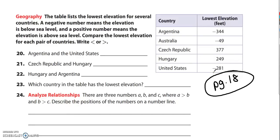Geography. The table lists the lowest elevation for several countries. A negative number means the elevation is below sea level and a positive number means the elevation is above sea level. Compare the lowest elevation for each pair of countries, write less than or greater than.